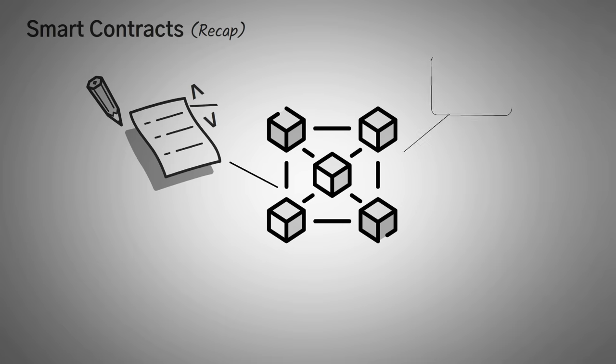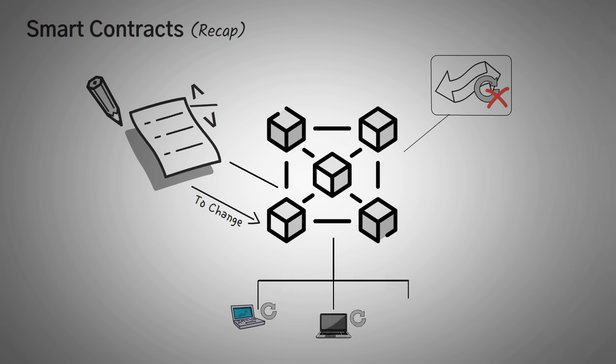Now you might be wondering, why a blockchain? Well, what happens on a blockchain cannot be changed. So when you and someone else come up with a financial agreement, to change that agreement you would have to change millions of computers all around the world. It's no longer just your word versus someone else's word, or an agreement written on paper. It's an agreement shared with millions of other people who have a copy of it.